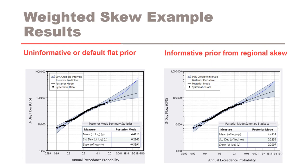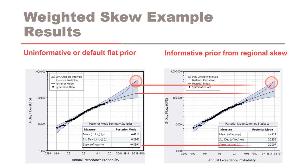Here are the graphical frequency curves comparing the results with and without a prior distribution on skew. You can see that the posterior mode skew statistic changes from negative 0.4 to negative 0.29, and the width of the credible intervals or uncertainty was reduced, which also results in the posterior predictive curve plotting less frequent. Thus we can see that incorporating regional skew information can reduce our uncertainty in the flood frequency results.